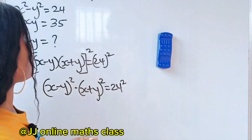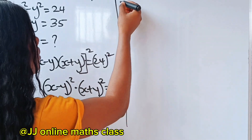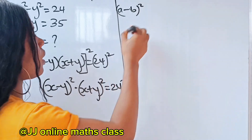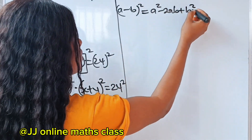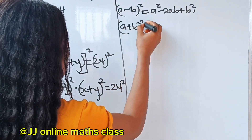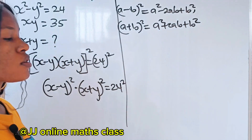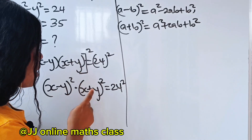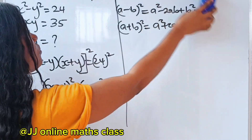Now x minus y squared is another algebraic identity. The identity a minus b, all squared, equals a squared minus 2ab plus b squared. And a plus b, all squared, equals a squared plus 2ab plus b squared. We're going to use these to expand since we have x minus y squared multiplied by x plus y squared.